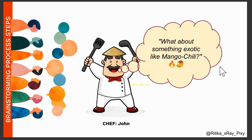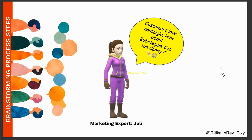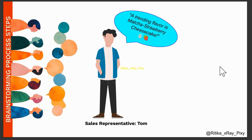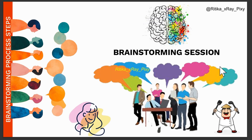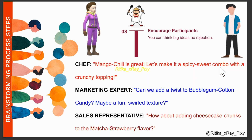Team members share their ideas freely. John suggests mango chili, Julie suggests bubblegum cotton candy, Tom proposes the trending flavor strawberry cheesecake, and Sophia, the customer feedback specialist, mentions many customers ask for coffee caramel popcorn. The discussion goes on for 40 minutes and no idea is rejected. Step three is to increase creativity by building on each other's ideas, and the team leader reminds everyone to think widely.